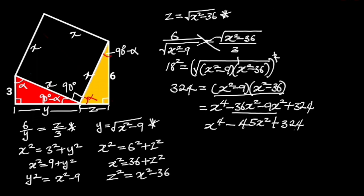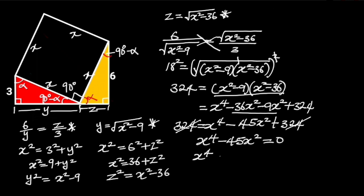Going further, we have 324 equals x to the power 4, minus 45x squared, plus 324. The 324 cancels out, and we are left with x to the power 4, minus 45x squared, equals 0. Which is the same as x to the power 4 equals 45x squared. Dividing through by x squared leaves us with x squared equals 45.